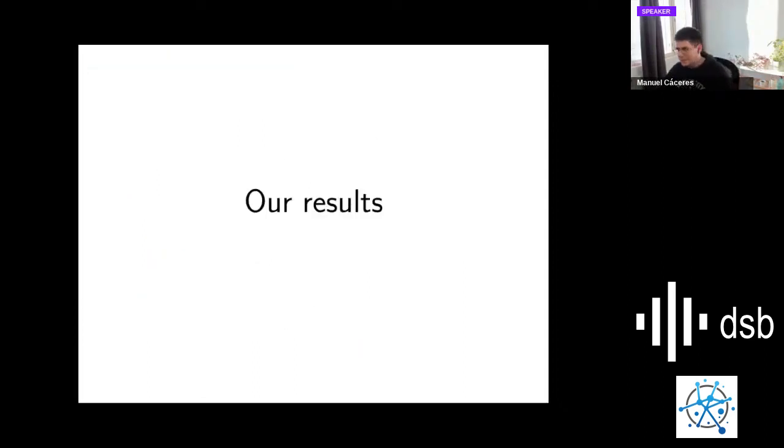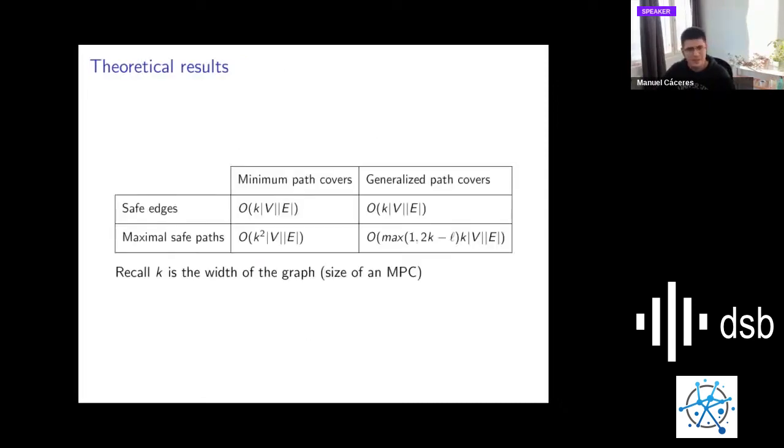I'm going to present our results now. We have both theoretical and practical results. In the theoretical side, we present polynomial time algorithms for computing both safe edges and maximal safe paths for both models, minimum path covers and generalized path covers, in essentially the same times. For edges, this works in order k times V times E, and for maximal safe paths in order k squared times V times E.